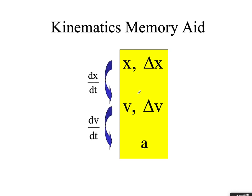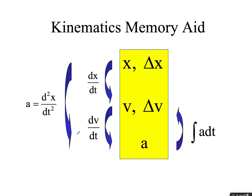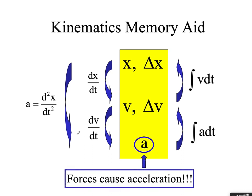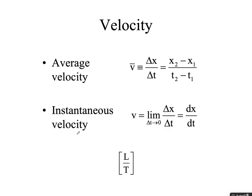Quick reminder: we can take the derivative of position to get velocity, the derivative of that with respect to time to get acceleration, and we could of course take the second derivative to go straight there. Reverse-wise, we can integrate acceleration with respect to time to get velocity, and integrate velocity with respect to time to get delta x. Forces cause acceleration.